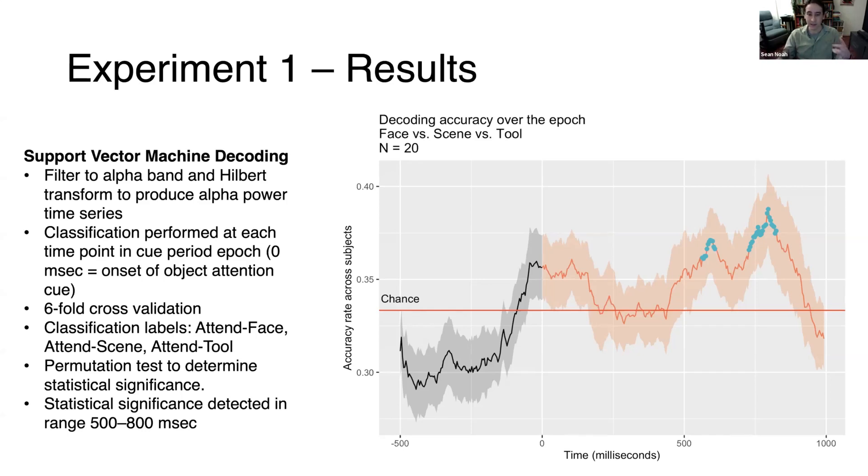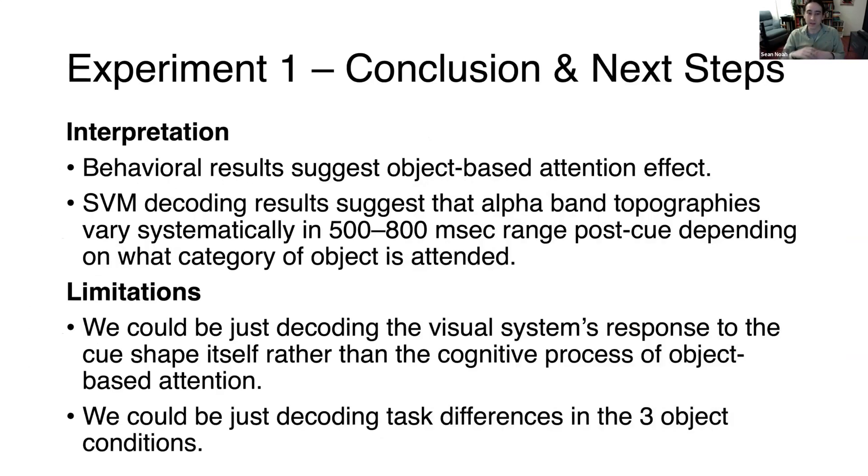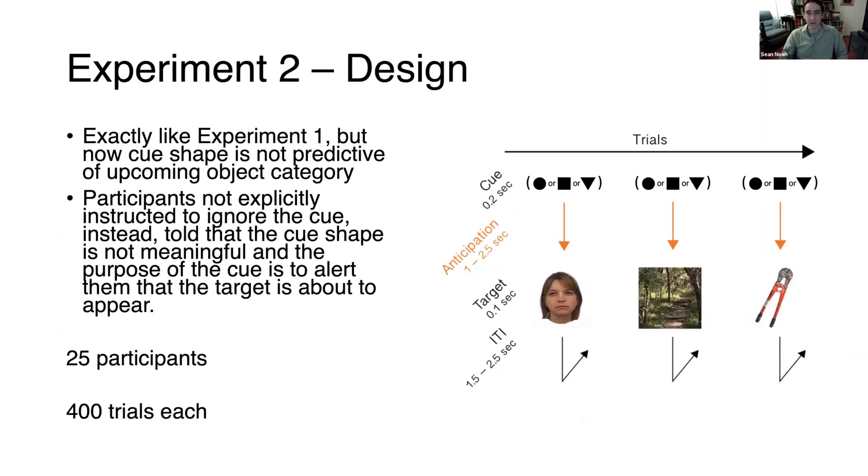This confirmed our hypothesis that we would be able to observe alpha power differences that varied systematically depending on what category of object you're attending to. You might think, as we did, that there are other factors that could contribute to our result. We designed two follow-up experiments to make sure that no other extraneous factors could explain the pattern of results we found and to be extra confident that we were really homing in on object-based attention driving these alpha power differences.